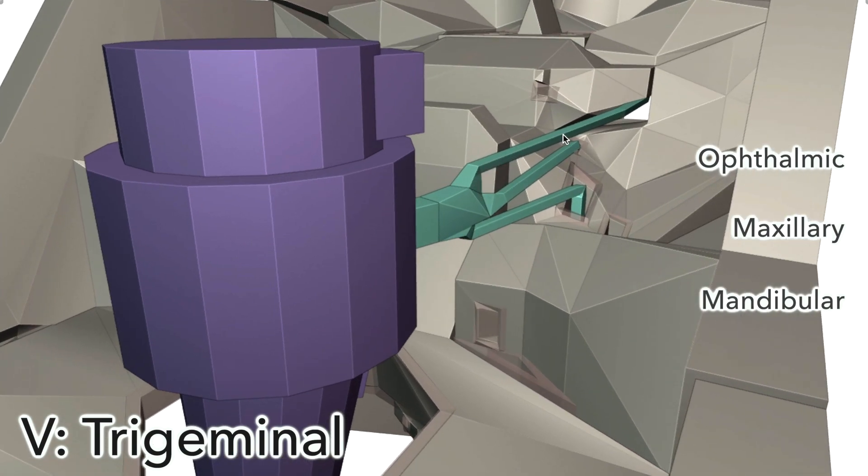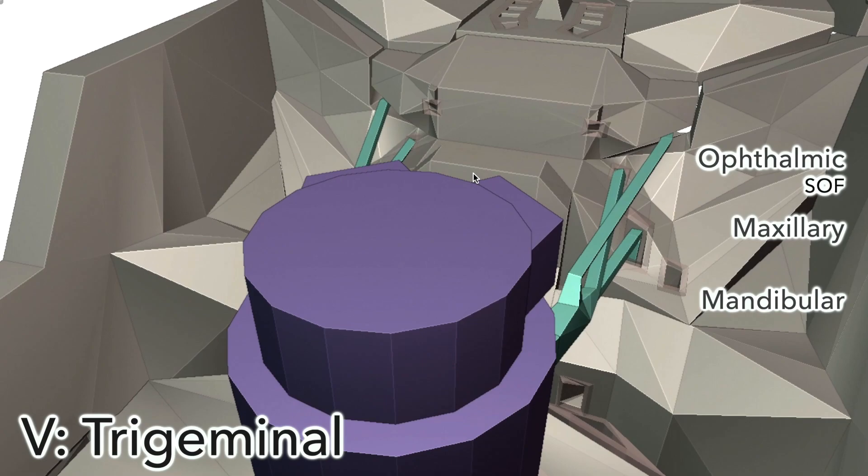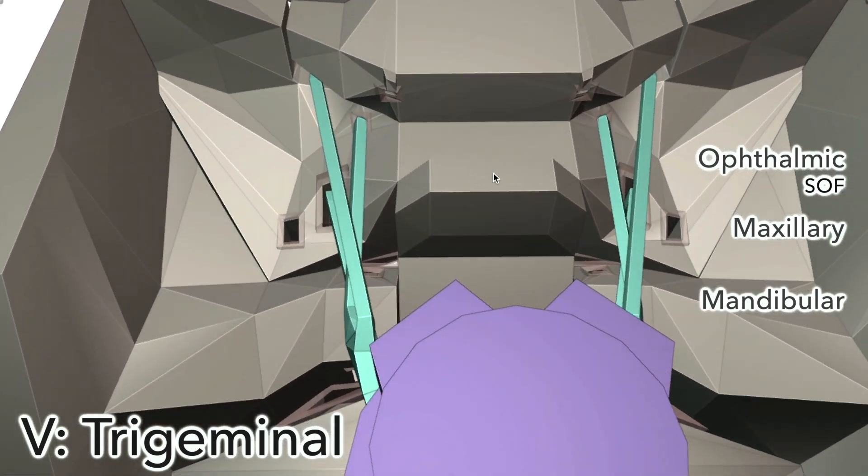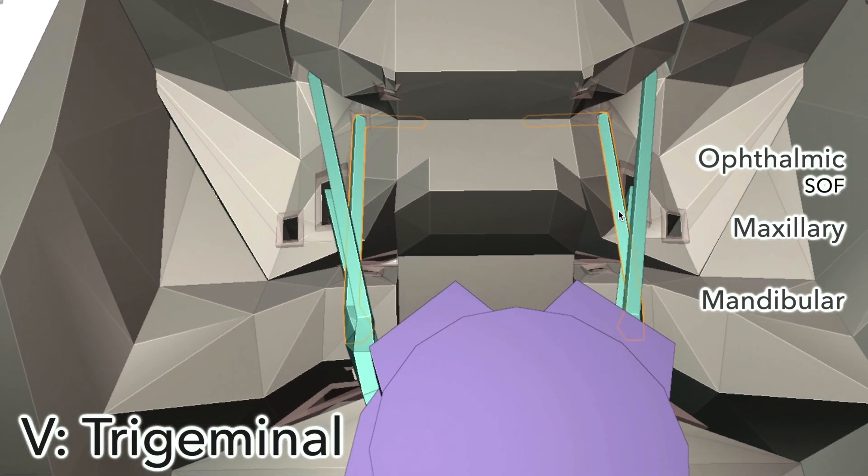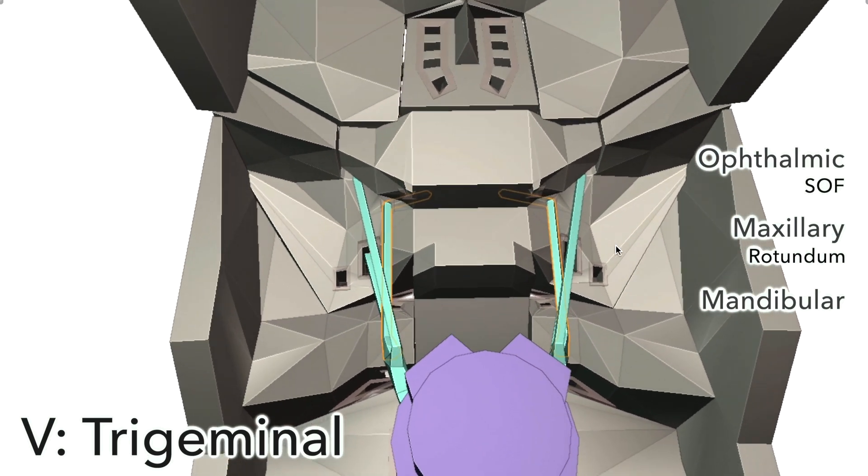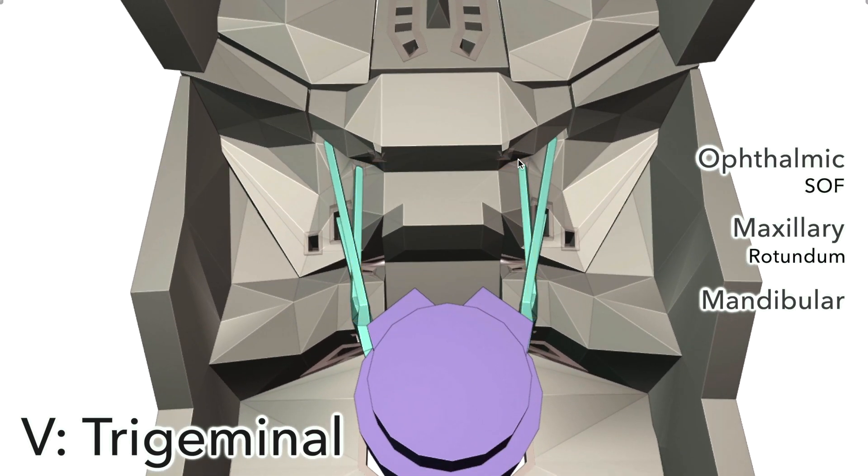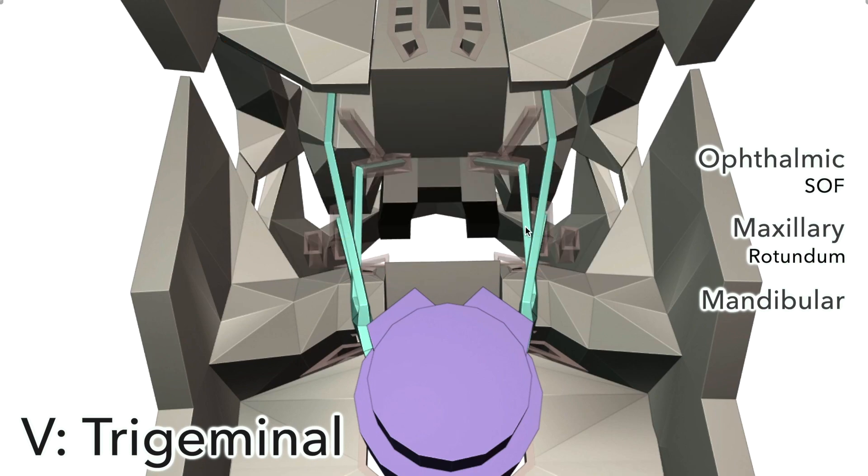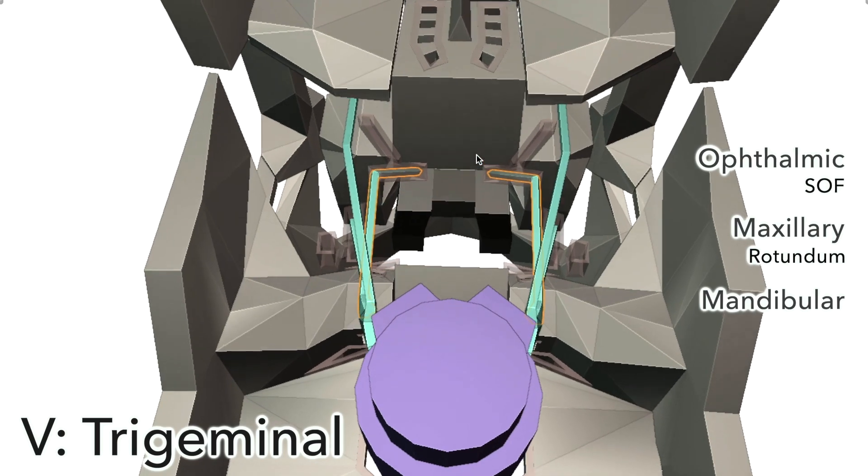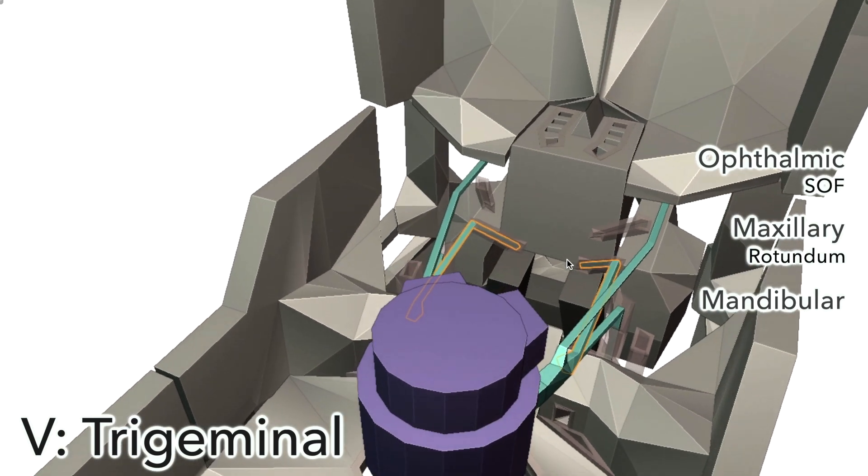The ophthalmic branch goes through the superior orbital fissure, heading to the orbit, which makes sense because ophthalmic literally means of the eye in ancient Greek. The maxillary branch goes through the foramen rotundum, which is a round hole in the sphenoid bone, just medial to the others there. If we remove the sphenoid, that makes it quite an interesting trajectory as well. The foramen rotundum angularly heading towards the midline.